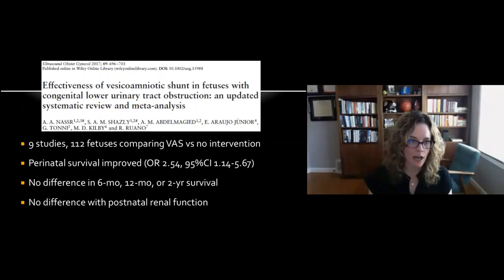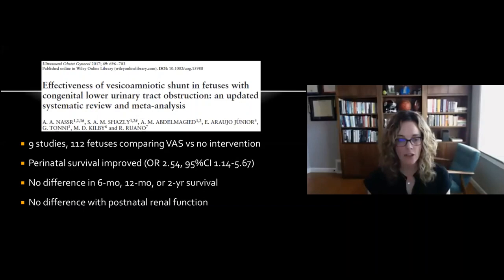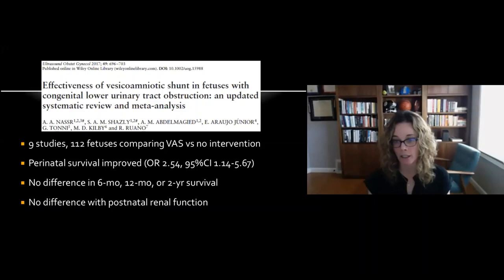A 2017 systematic review and meta-analysis looking at vesicoamniotic shunting effectiveness reviewed nine studies comprising 112 fetuses. Compared to no intervention, there was a 2.5 times greater odds of perinatal survival. However, there was no difference in six-month, 12-month, or two-year survival, and no difference in postnatal renal function whether or not shunting was performed.